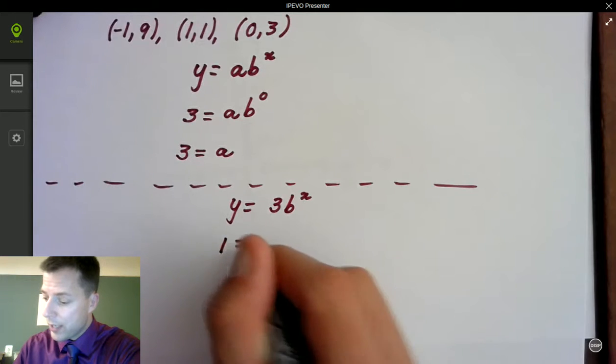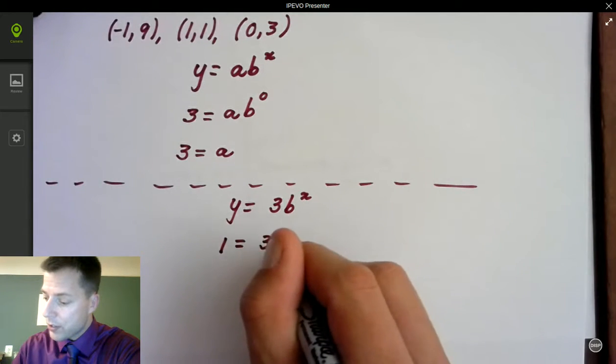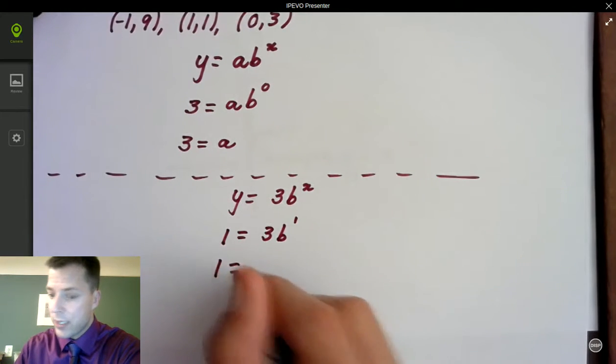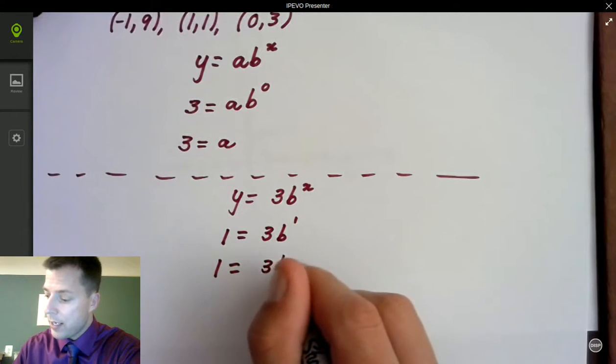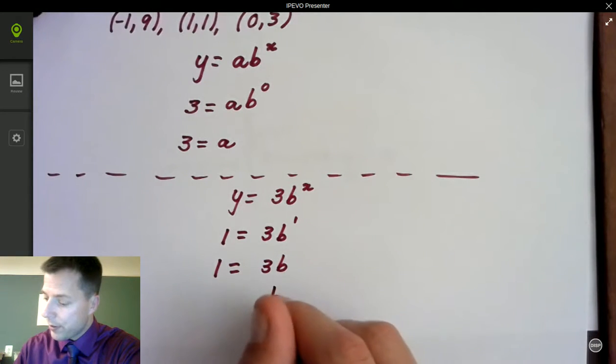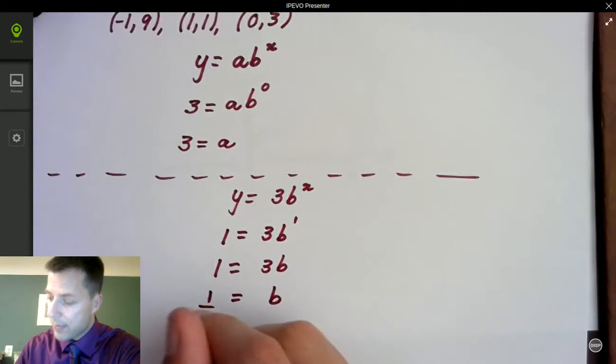So when y is 1, x is 1. So b to the 1st. So I have 1 equals 3b. That means b equals 1 3rd when I divide each side by 3.